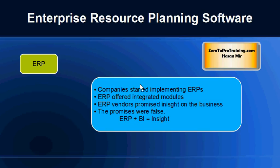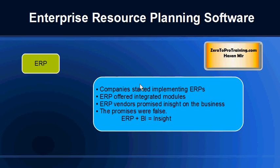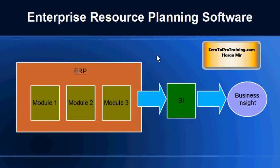More and more companies started implementing enterprise resource planning software called ERPs. They are a special breed of software which provides an end-to-end information management solution for a company, so that the right information could be given to the right person at the right time. SAP, Oracle Applications, PeopleSoft, and JD Edwards are a few examples.